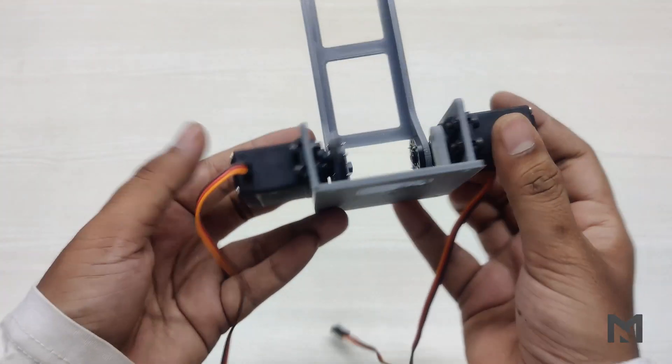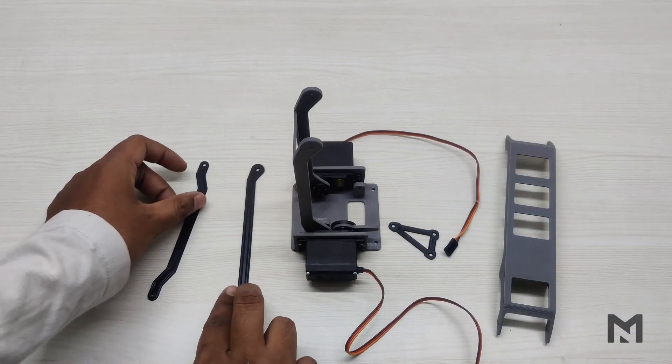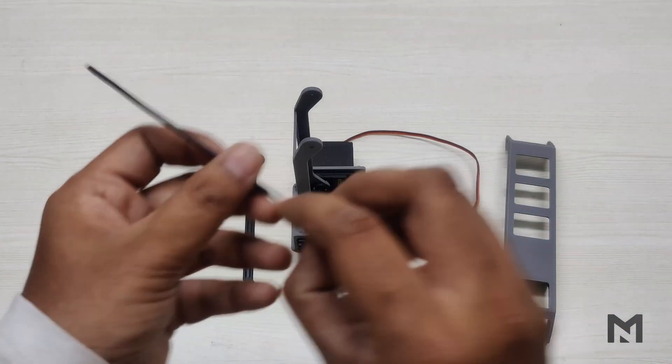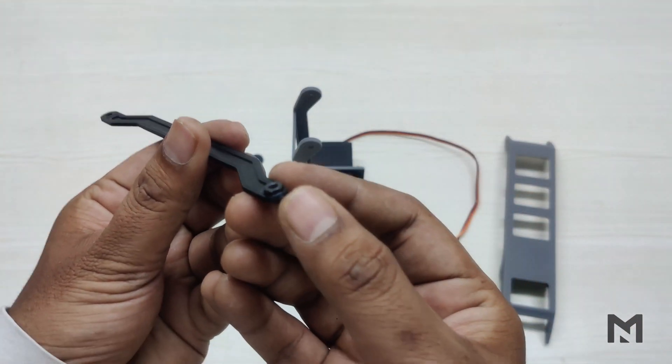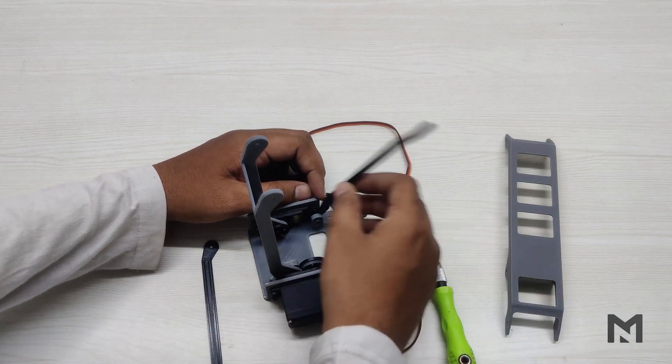And attach it in its position using a servo tester. Once completed, the base assembly will look like this. Now it's time to mount the horizontal arm. First take the vertical connecting link and fix an M3 nut on top of it using super glue. Now connect it with the base plate using a 10mm screw.